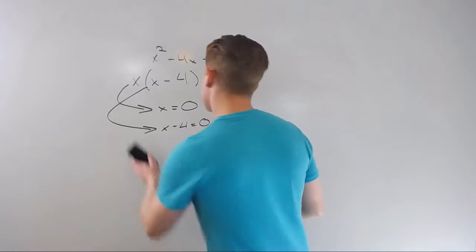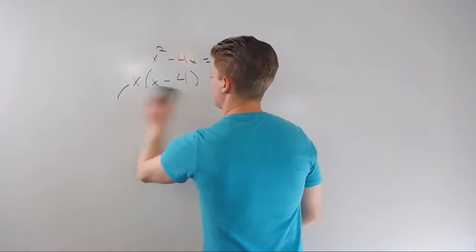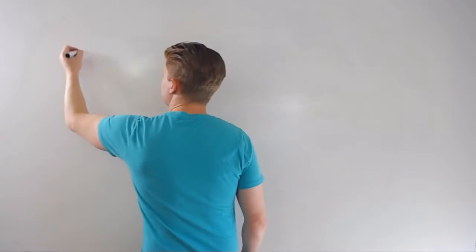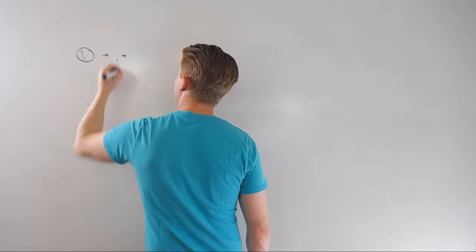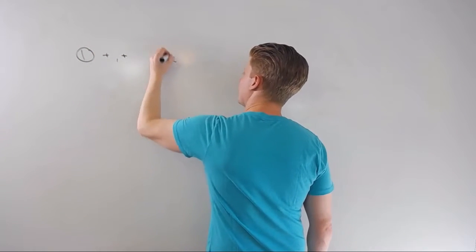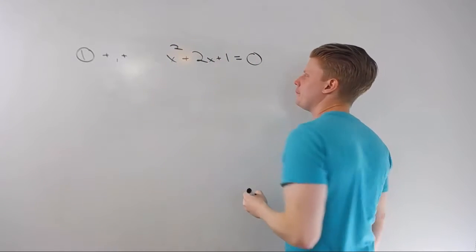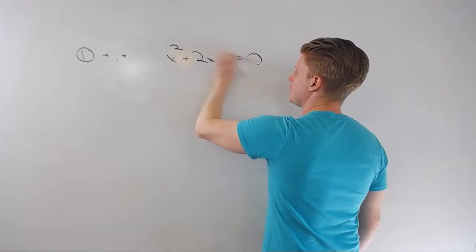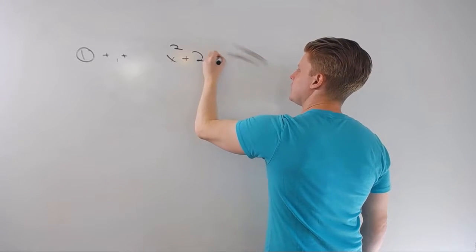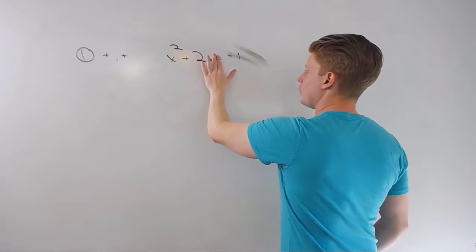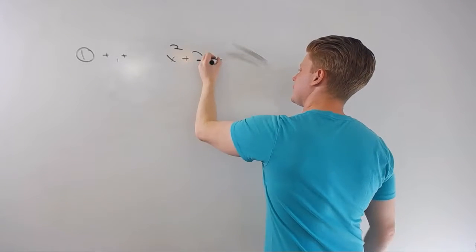Now let's look at the bread-and-butter factoring you're most used to seeing. There are three ways this works and it all depends on the signs. The first case is plus-plus, for example x squared plus 2x plus 1 equals 0. If it's not set equal to 0, say it equals negative 1, I'd add 1 to both sides to get x squared plus 2x plus 1 equals 0.